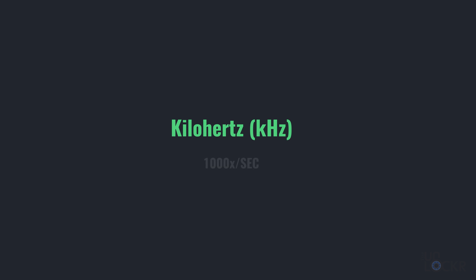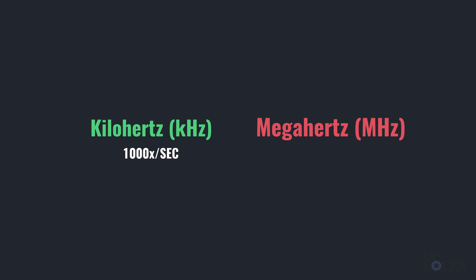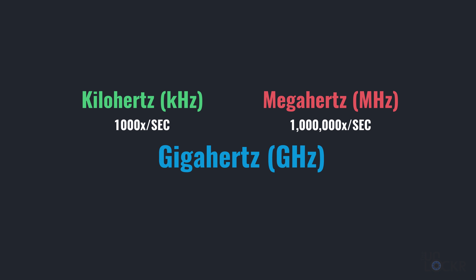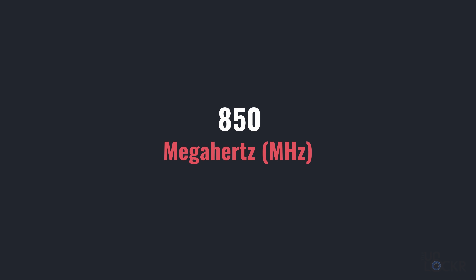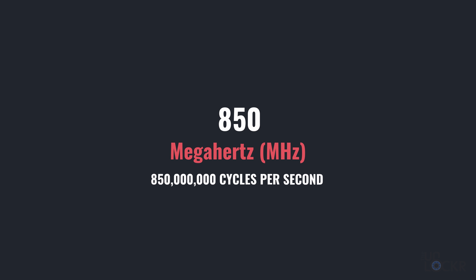Kilohertz is a thousand times a second. Megahertz, a million times a second. And gigahertz, a billion times a second. So a frequency like 850 megahertz — a common cellular frequency — translates to 850 million cycles per second. There's only so much spectrum to go around, because once something is broadcasting on a frequency, other things can't also broadcast on that same frequency in the same space, or they'll interfere with each other.